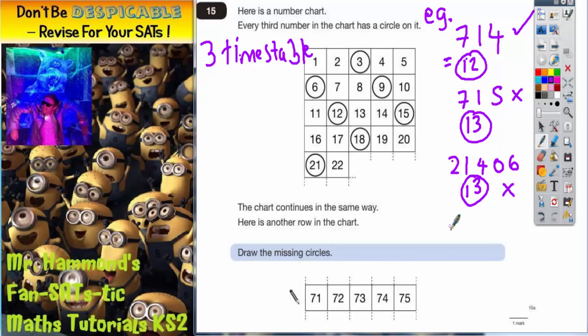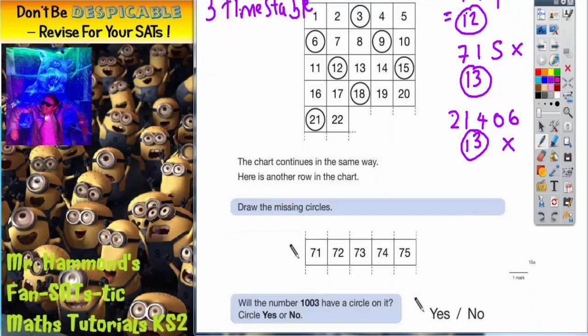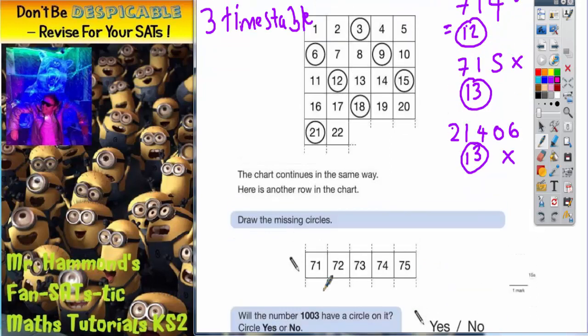Now we can use this fact to help us work out which of these would be in the 3 times table. So all we need to do is find the totals. Well, 7 plus 1 is 8 and 8 is not in the 3 times table, so 71 wouldn't be either. 7 plus 2 is 9. 9 is in the 3 times table. Therefore it would need to have a circle around it.